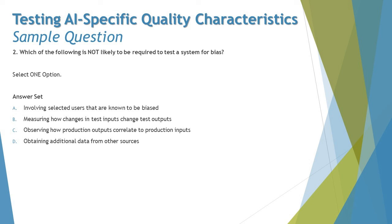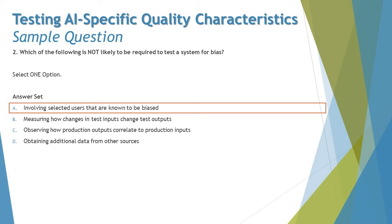Options B, C, and D are all correct approaches for testing a system for bias. The only option that is not recommended is A — involving selected users that are known to be biased. So the right answer is A.